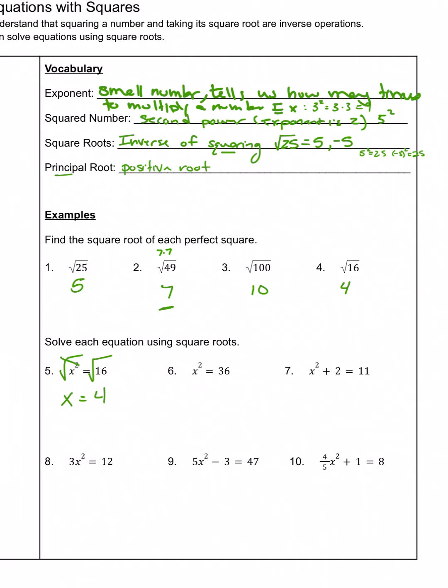So number 6, again, I see that squared. To get rid of that, I'm going to take the square root. Must do the same to both sides. Those are inverses, so they cancel each other out. We're left with our variable. Square root of 36 is 6. And again, we're just focusing on the principal root.